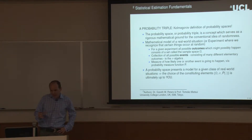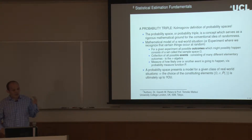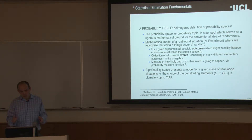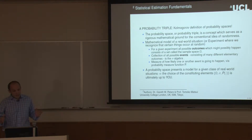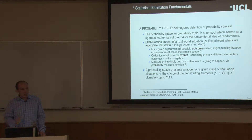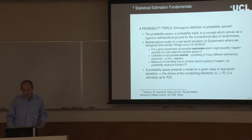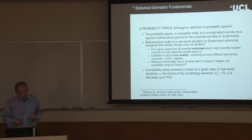A key concept in probability theory — the key building block — is this notion of a probability triple, which is the Kolmogorov definition of a probability space. The probability space or triple is a concept that serves as rigorous mathematical grounding for the conventional idea of randomness. This model of a real world situation or experiment consists of three things: a triple.